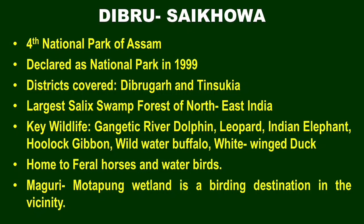Dibru-Saikhowa has the largest salic swamp forest of Northeast India. The salic swamp forest is the largest in Northeast India. Wildlife here includes the Gangetic River Dolphin, which is a national aquatic animal, leopard, Indian elephant, hoolock gibbon, wild water buffalo, and White-winged Duck. The tiger is also mentioned on Wikipedia for this park.